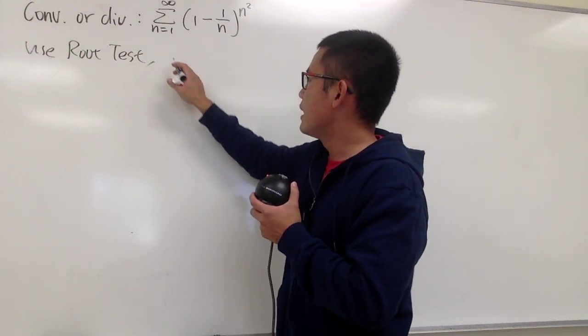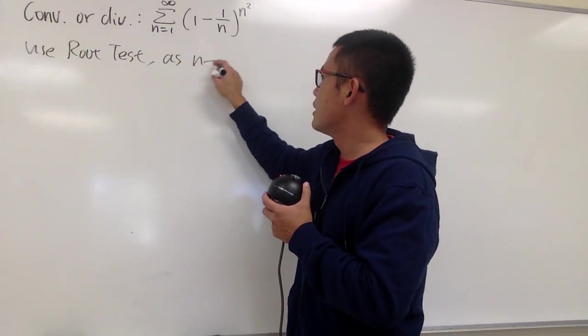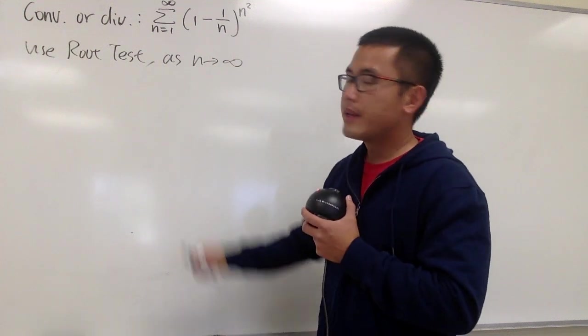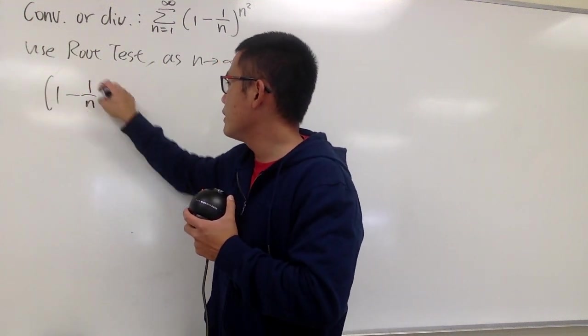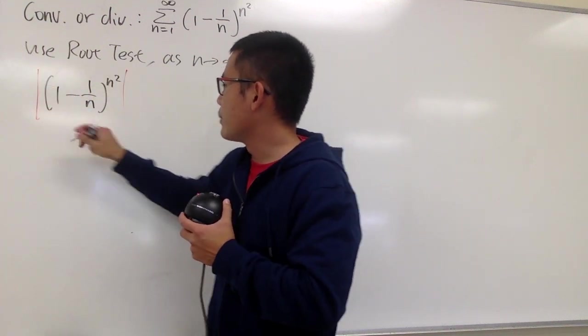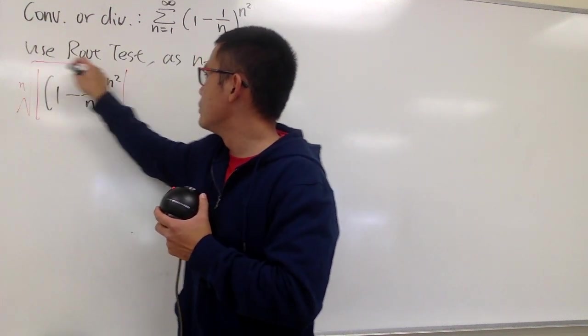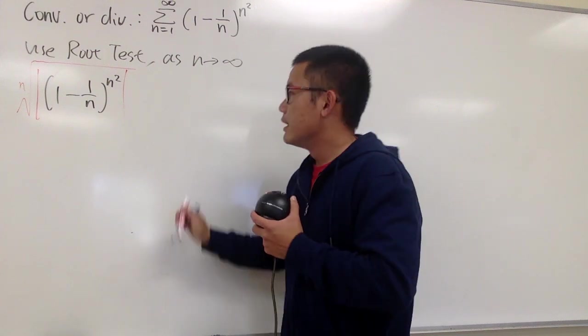Using the root test, we have to take the limit as n goes to infinity, and I'll put this down right here: 1 minus 1 over n raised to the n squared power. Take the absolute value and also take the n-th root.